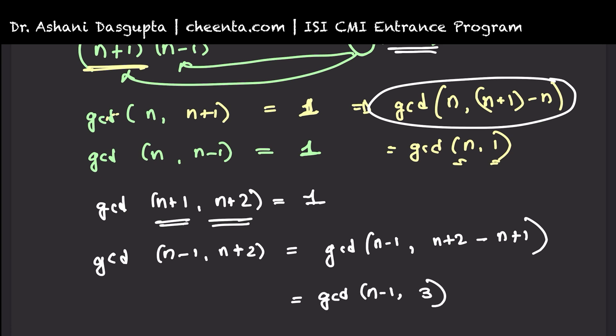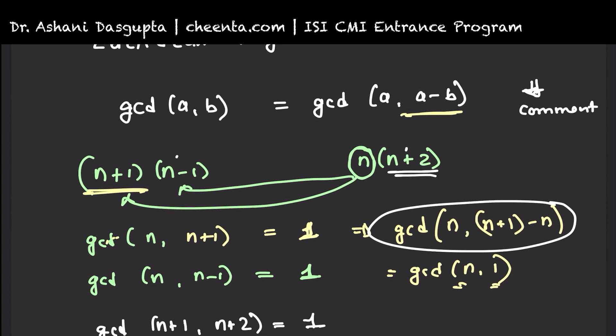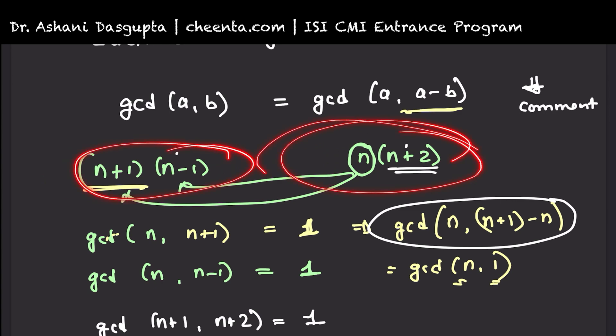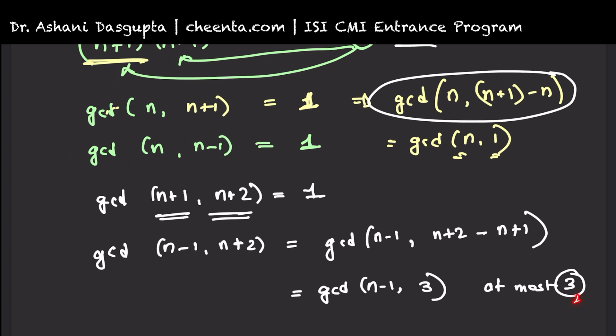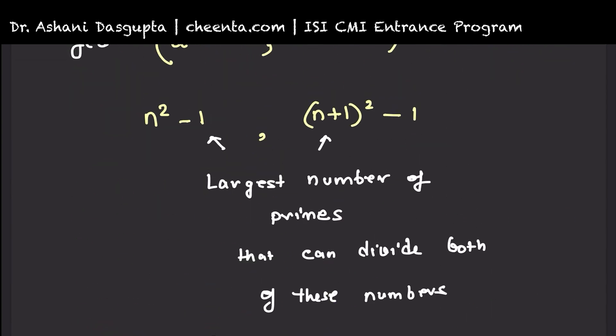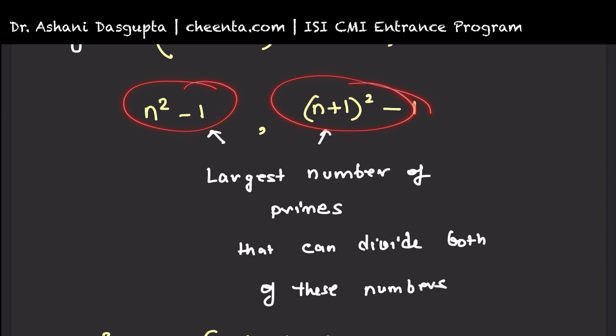What can be the GCD of any number and 3? Well, it is either 1 or 3. It is at most 3. Which means the only number that can divide both of them, the only number that could possibly divide both of these two things is 3. So at most 1 prime number can divide both of these numbers, and that number is 3.